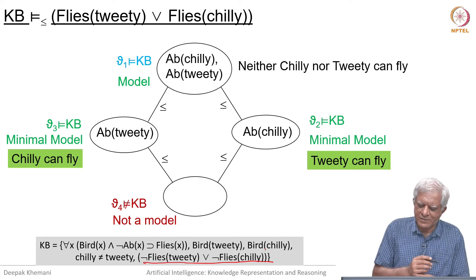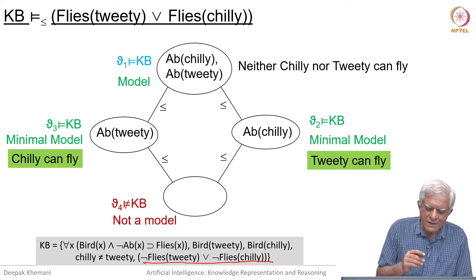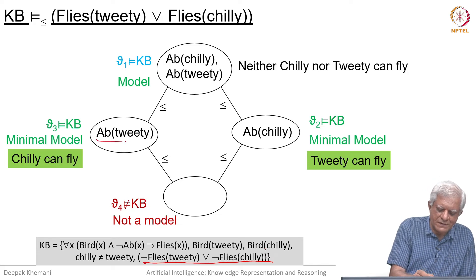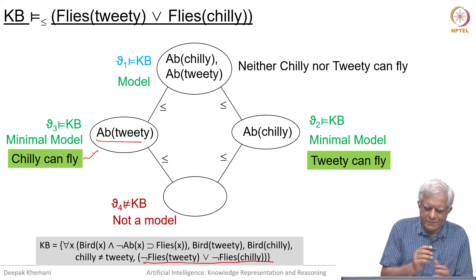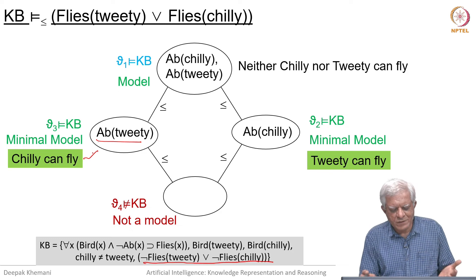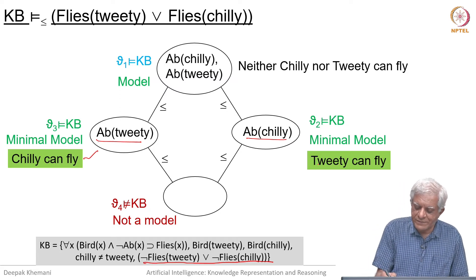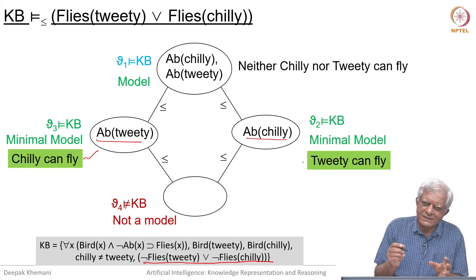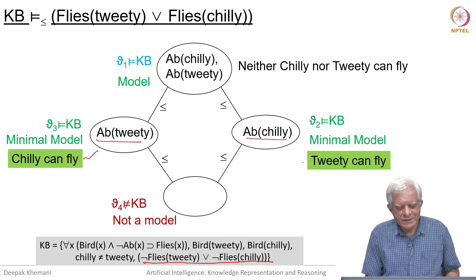Both are models, because the knowledge base is true. We have said in the knowledge base that it should be entailed that abnormal Tweety or abnormal Chilli — so at least one of them is abnormal, which satisfies the knowledge base. In the interpretation on the left where Tweety is abnormal, Chilli is not abnormal, so Chilli can fly. That is a minimal model because there is no smaller model in which the knowledge base is entailed. Likewise, on the right-hand side, Chilli is abnormal and it is also a minimal model, and in that interpretation Tweety can fly. So in one interpretation Chilli can fly, in the other Tweety can fly.